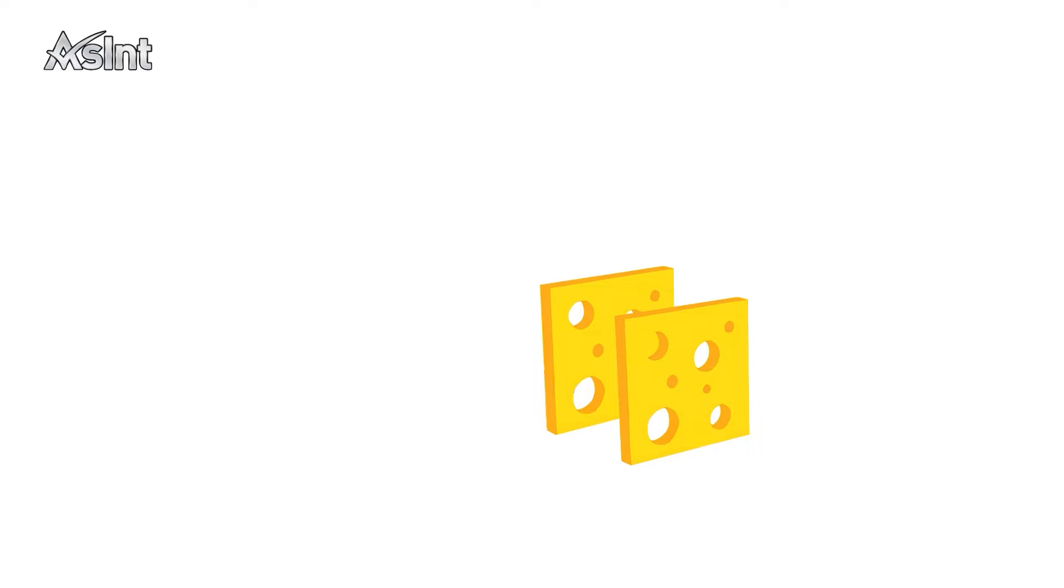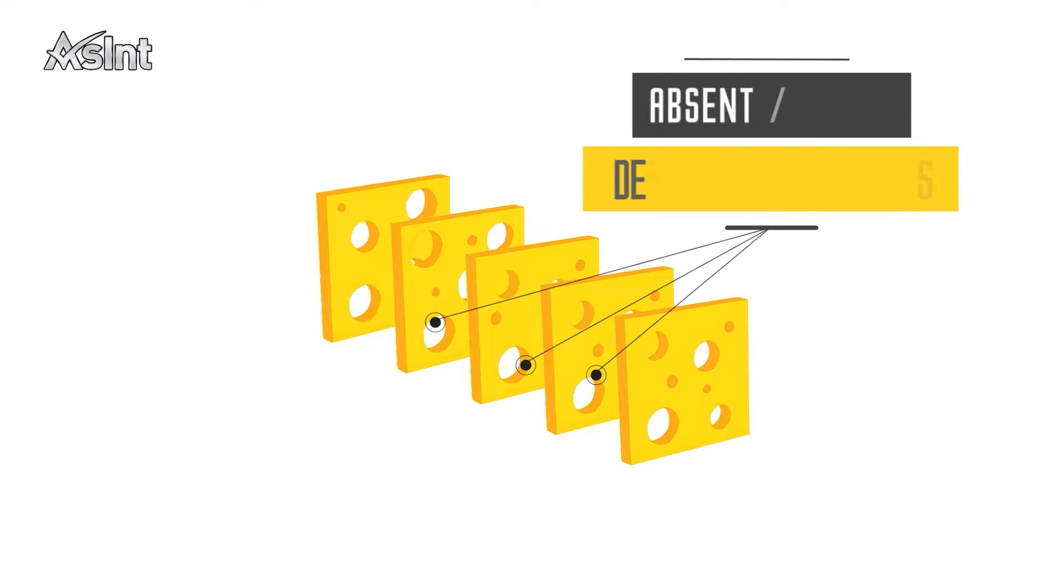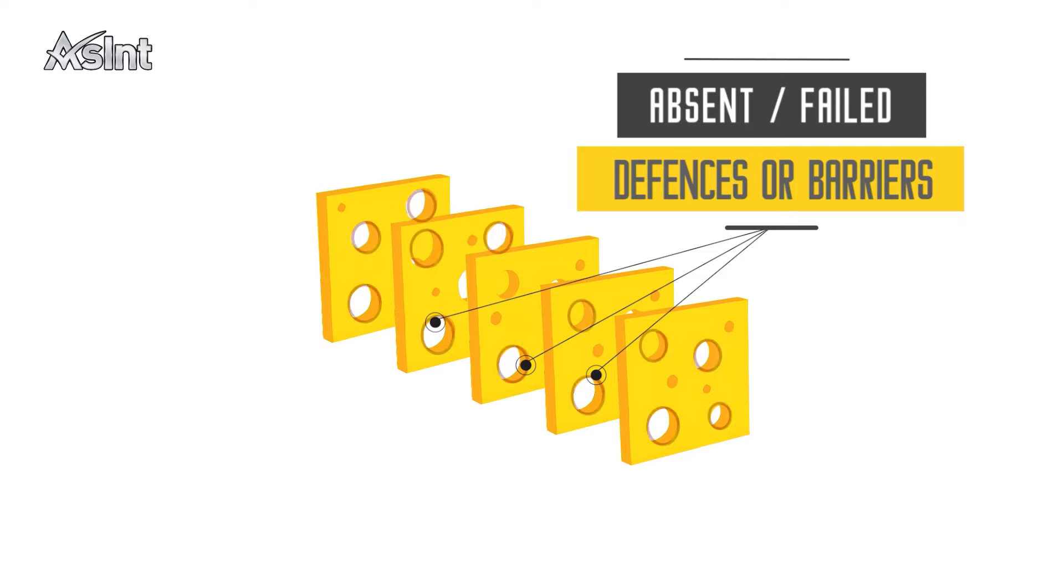Imagine a scenario where system failures happen when multiple layers of defense have flaws or holes that align. Absent or failed barriers at each level are represented as holes in the cheese. When these holes across each level of the system line up, they provide a window of opportunity for an accident or event to occur.